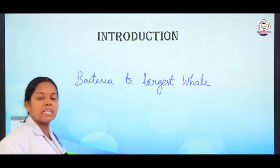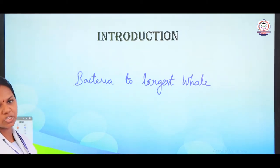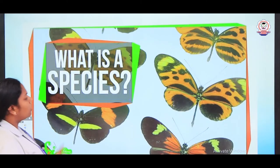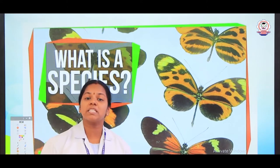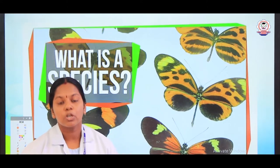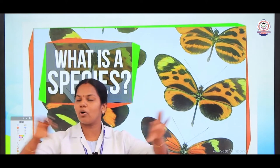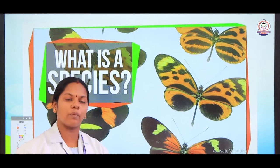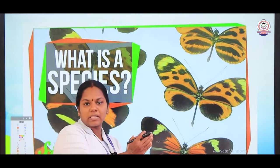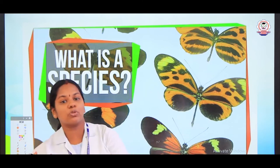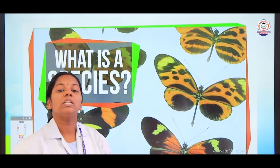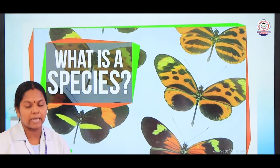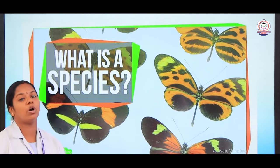Now let us see what is a species and what are all the various levels of classification. The species is a group of closely related organisms. For example, we all human beings belong to the same species — we are all Homo sapiens. Likewise all butterflies, all dogs belong to the same species. The species is a group of organisms which have more similarities and they have the capacity to interbreed among themselves.